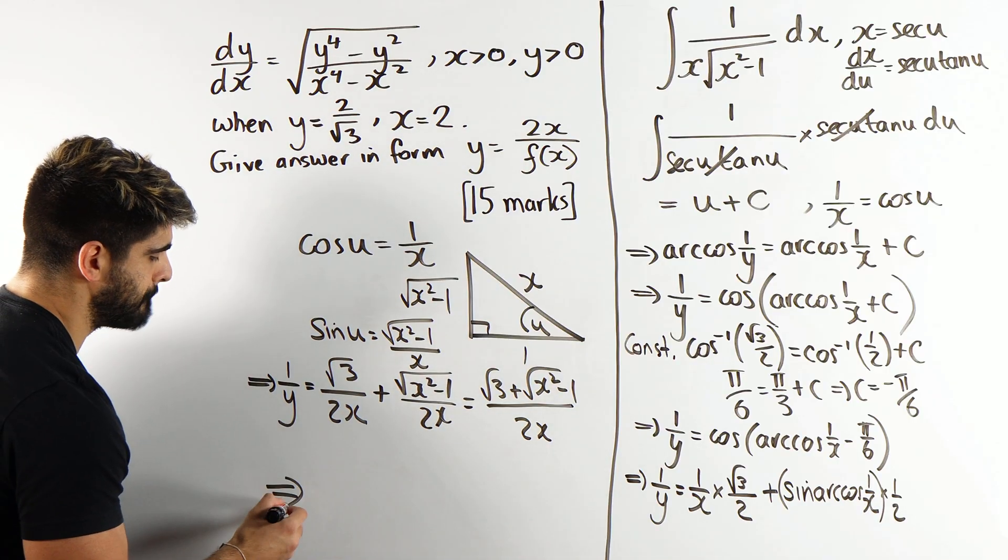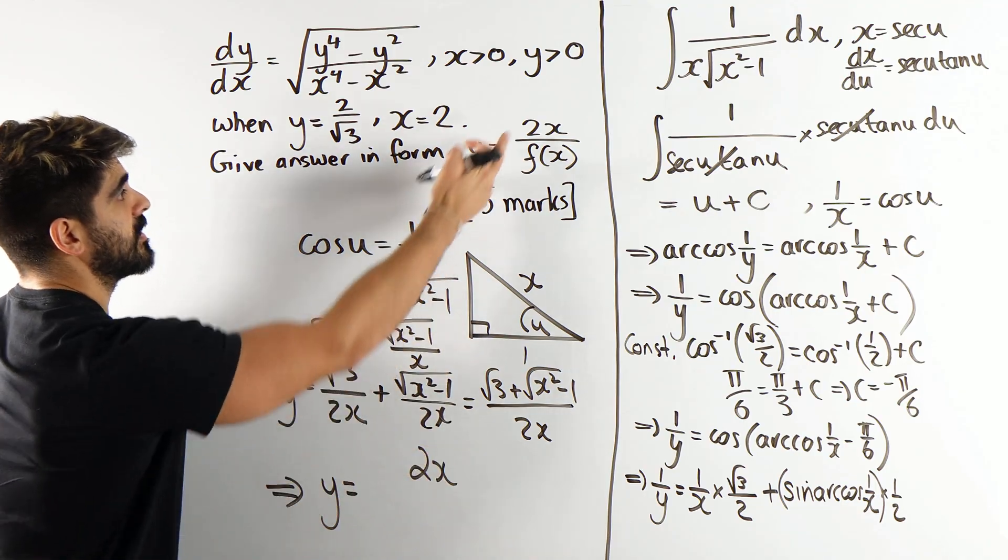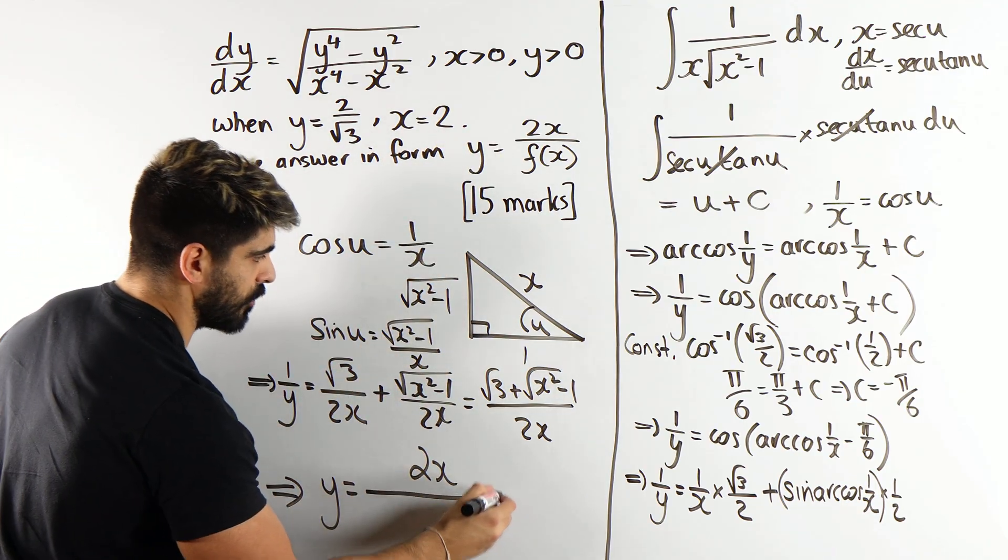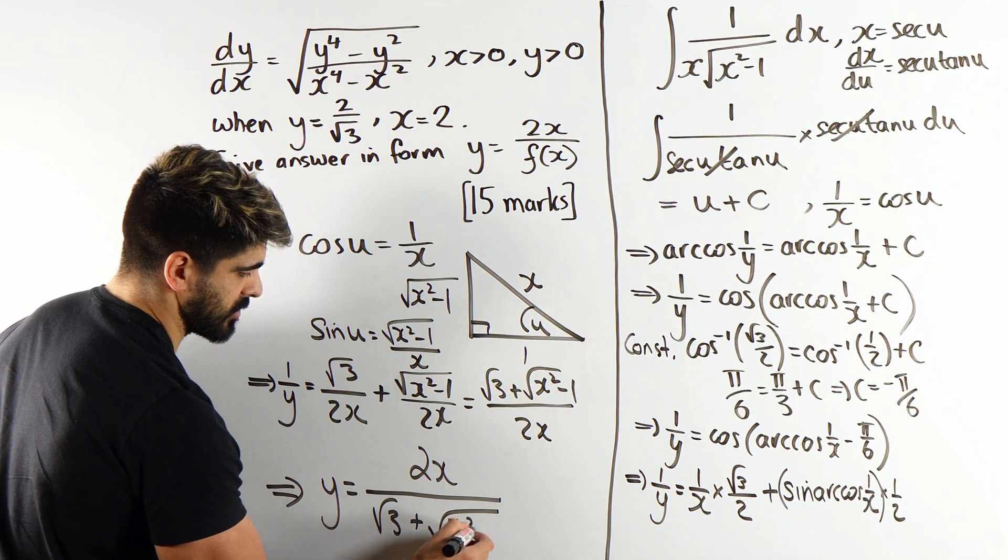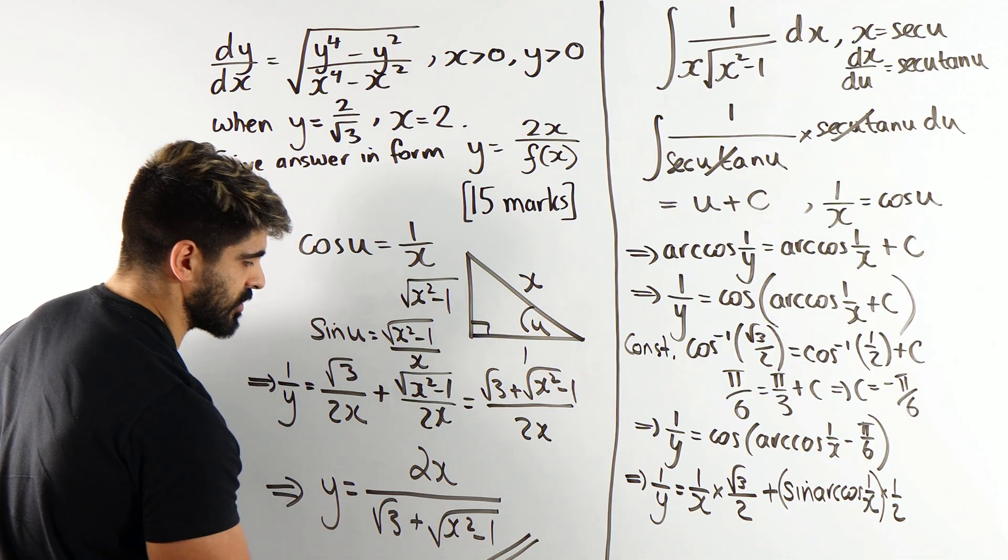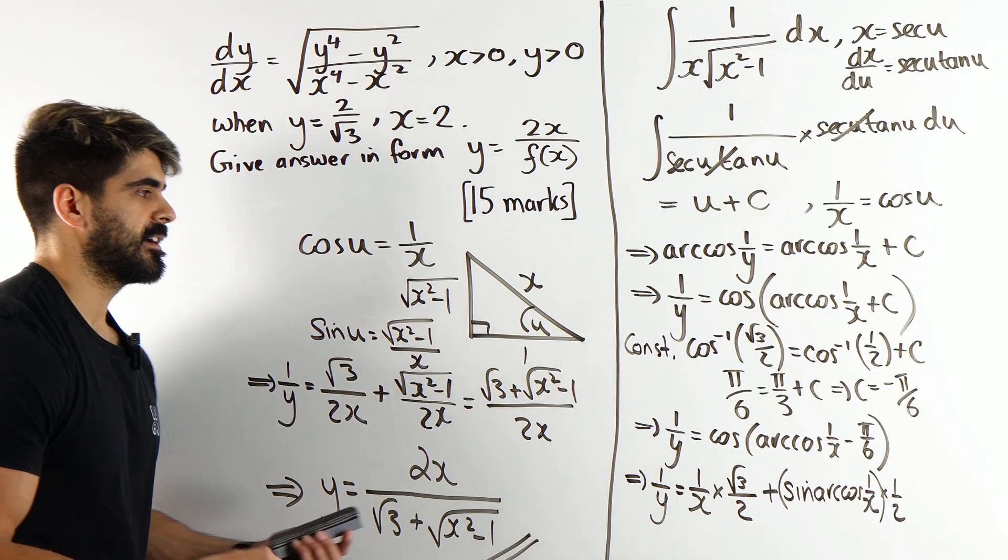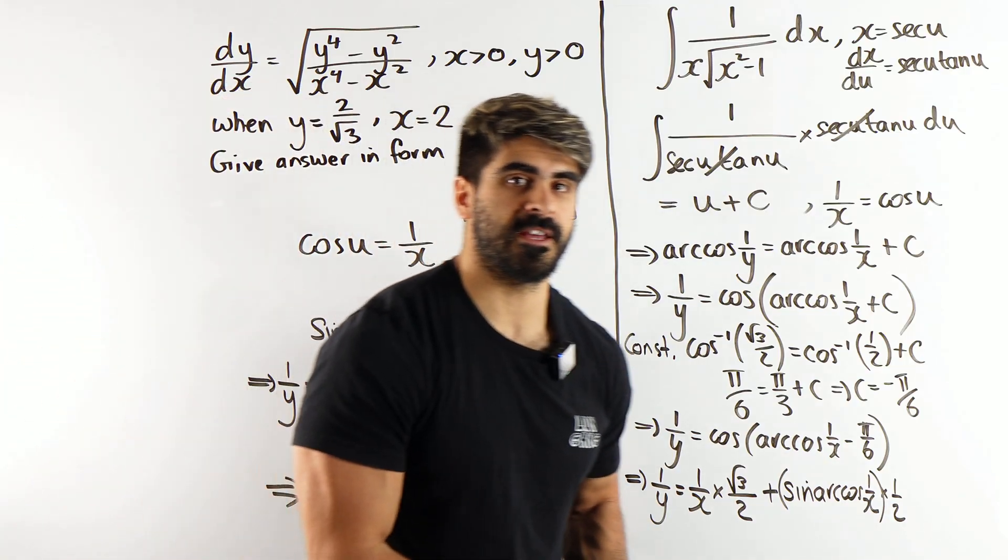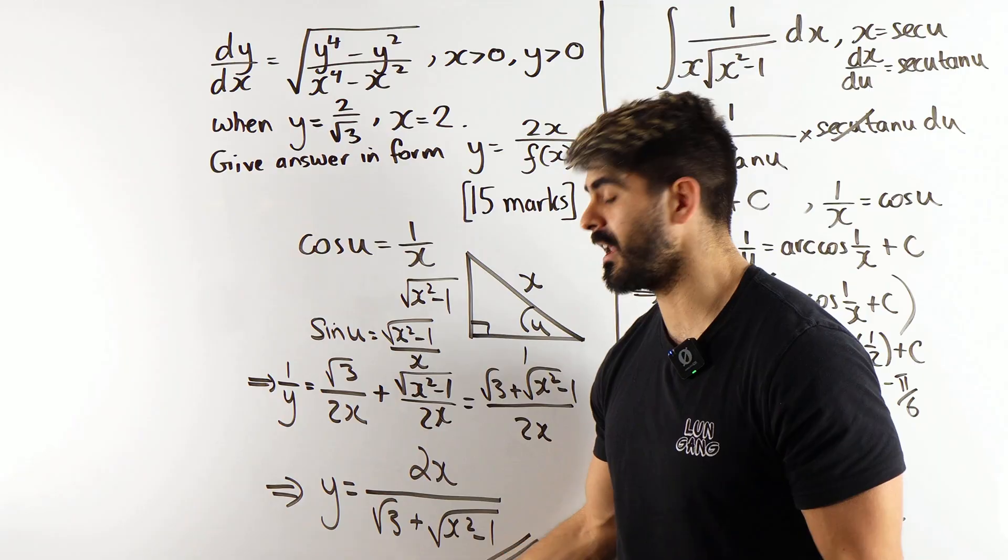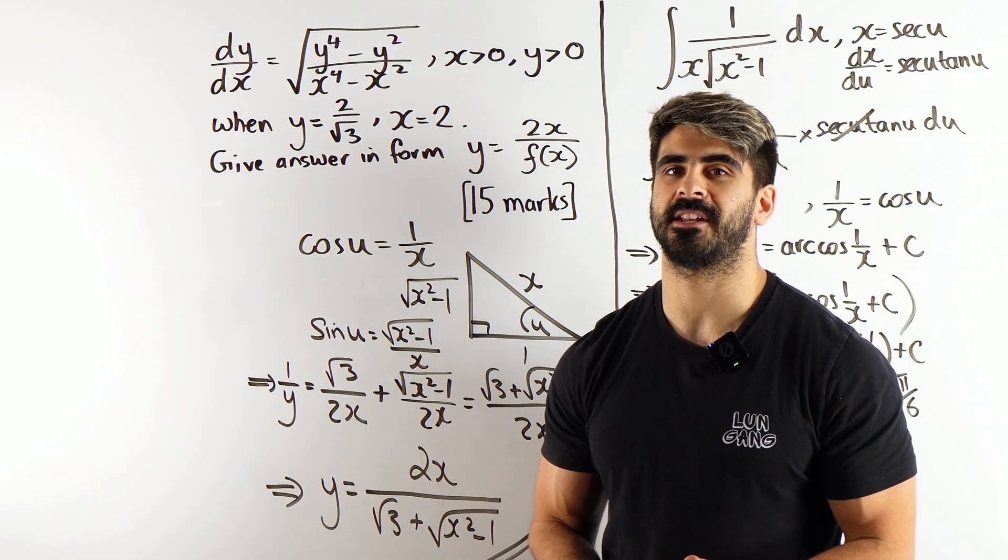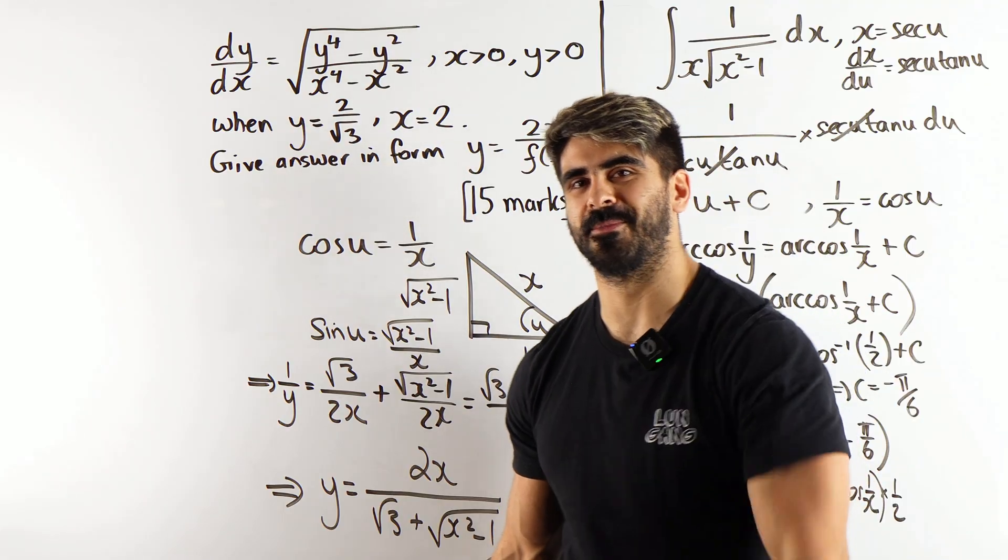And there we go. We're going to get our beautiful final answer. You can see here there was 2x on the top over root 3 plus root x squared minus 1. And that is the solution to our 15 mark question. I'm guessing, guys, there was a lot of stuff here that you might have learned today. So, if you did, I'd really appreciate it if you could hit that like button and make sure you're subscribed for more content like this. I'll see you guys in the next video. Nice one, mate.